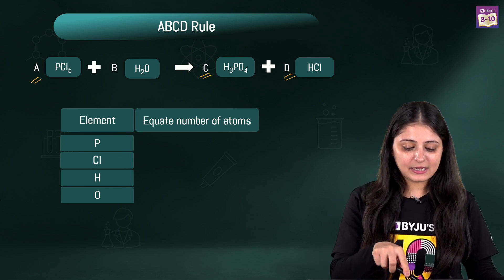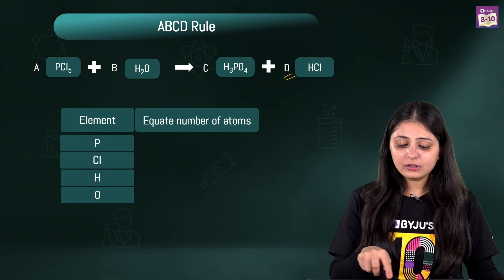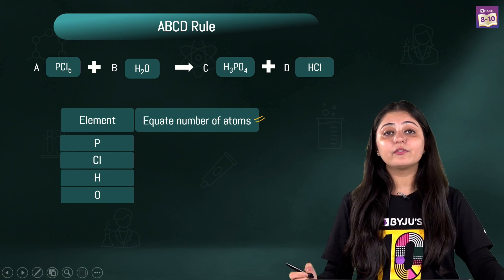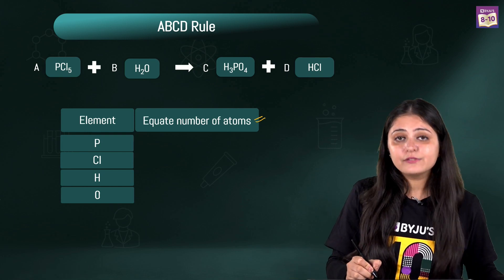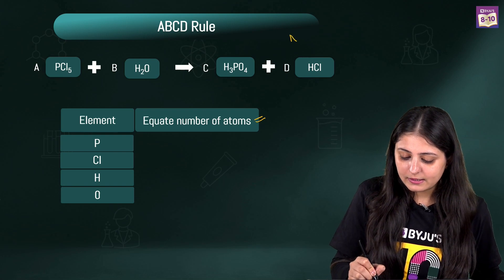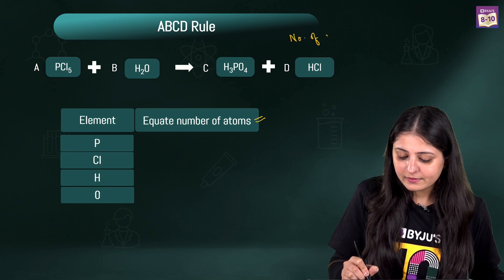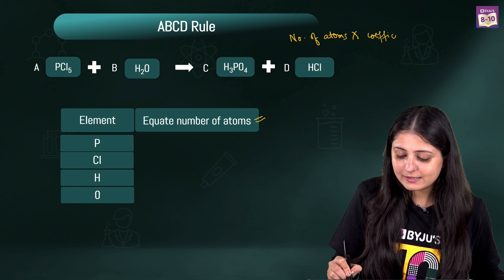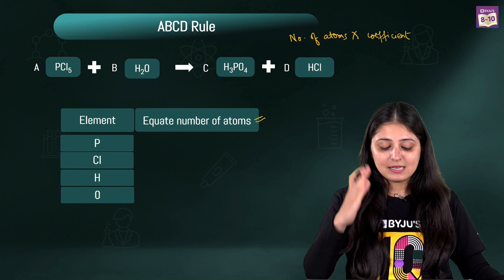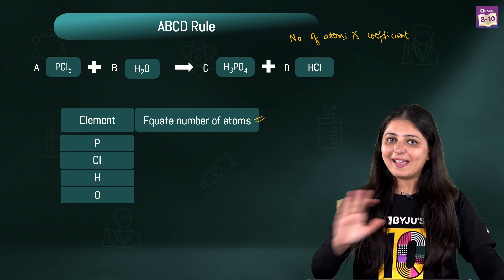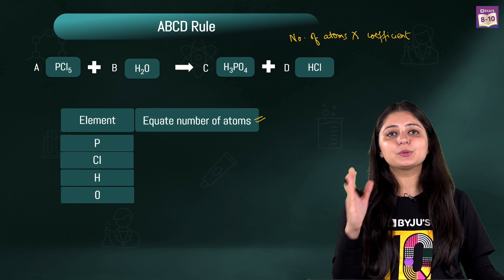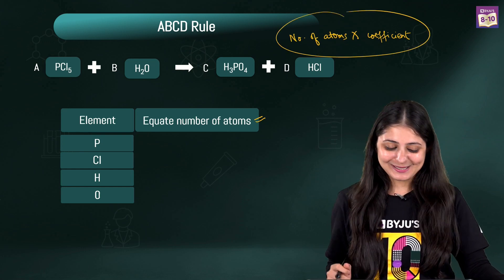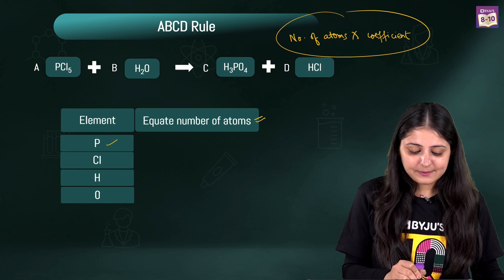The most important step is to equate the number of atoms. Just follow this simple rule: number of atoms multiplied by the coefficient. That's it. Just do this and you will be able to equate everything. Let's apply this for phosphorus.